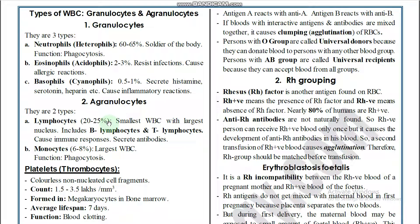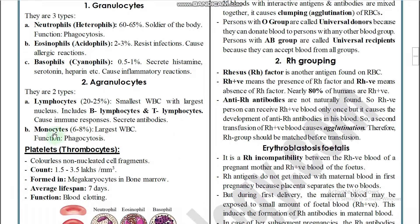Lymphocytes make up 20 to 25% of WBCs. They are the smallest WBC but have the largest nucleus. Lymphocytes include B and T lymphocytes, and they cause immune responses and secretion of antibodies against antigens.